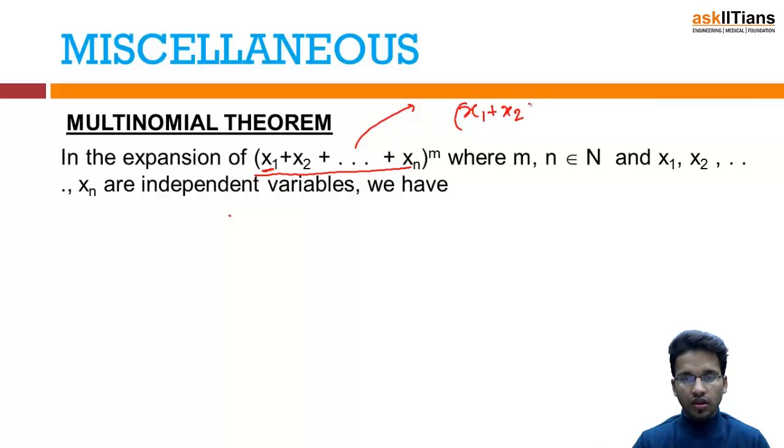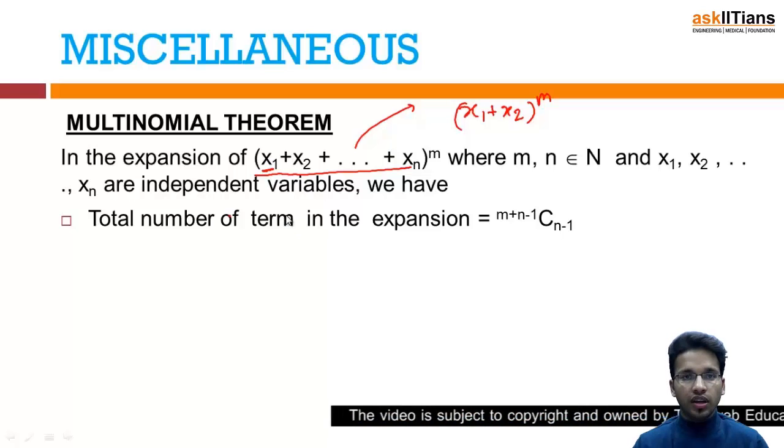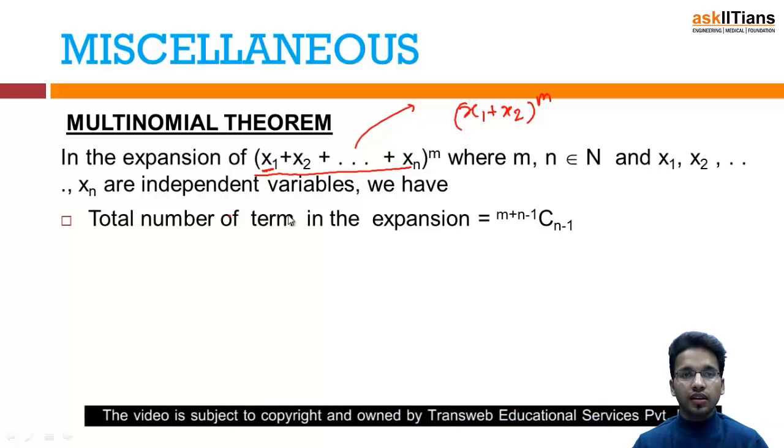Now the limiting case of this was the binomial in which we were saying x₁ plus x₂ raised to power m. That was a limiting case. Now here if I have an expansion of this kind, how will I solve? The total number of terms in the expansion is m+n-1Cn-1. Now for this, a prerequisite will be the knowledge of combination, and in specific, distribution.